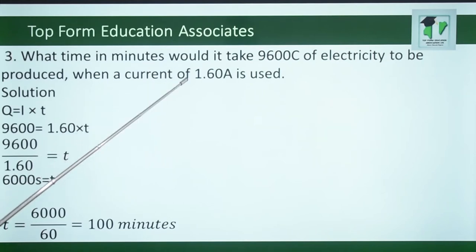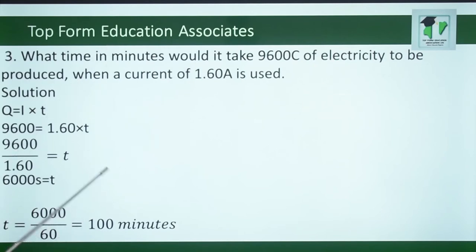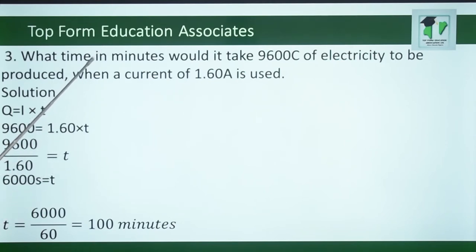Number 3. What time in minutes will it take for 9,600 coulombs of electricity to be produced when a current of 1.60 amperes is used? Q equals IT, therefore 9,600 equals 1.60 multiplied by T. Dividing 9,600 by 1.6 gives T equals 600 seconds. Since the question asks for time in minutes, we convert 600 seconds to minutes, giving 10 minutes.